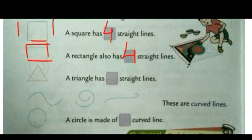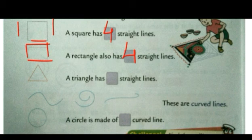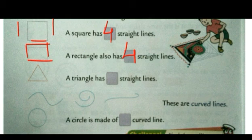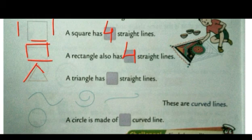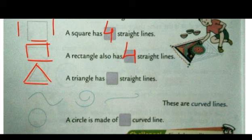Now see the next shape. It's a shape of a triangle. A triangle has dash straight lines. How many straight lines can you see? One, two, three — we can see three straight lines. So we will write here three.